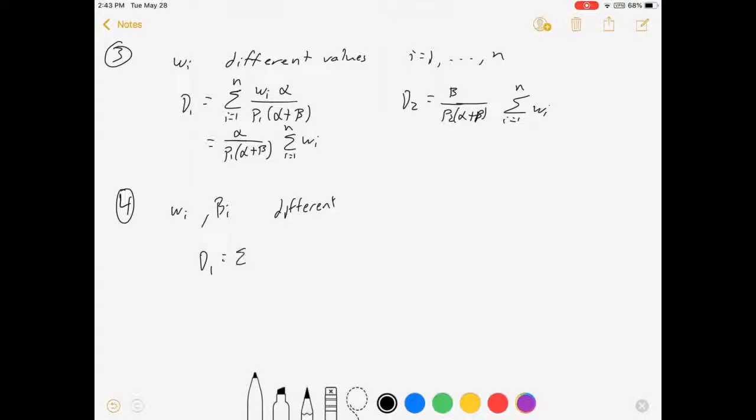Well, the idea is still pretty much the same. We're going to sum over all of the stuff we care about. So it's i equals one to n, another sum for j equals one to n, wi alpha over p1 alpha plus beta j. And D2 is equal to the double sum of wi beta j over p2 alpha plus beta j.